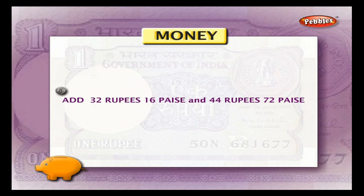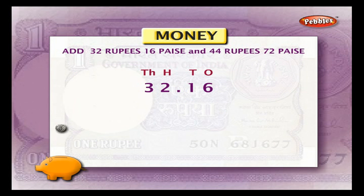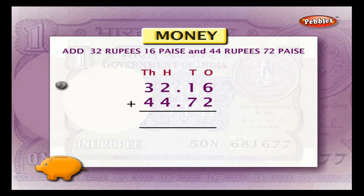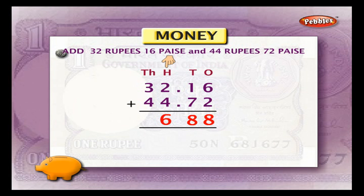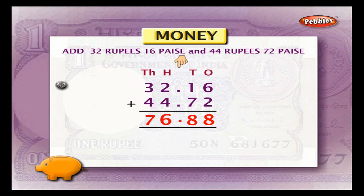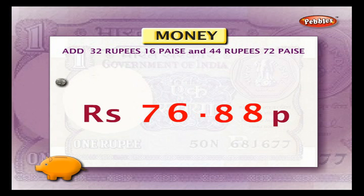Addition in rupees and paisa. Example 1: add 32 rupees 16 paisa and 44 rupees 72 paisa. Arrange them in column and do addition as we generally do. Add the ones column first: 6 plus 2 is equal to 8. Add the tens column: 1 plus 7 is equal to 8. Add the hundreds column: 2 plus 4 is equal to 6. Add the thousands column: 3 plus 4 is equal to 7. Place the dot in the answer below the dot column. We get 76.88, that is 76 rupees and 88 paisa.